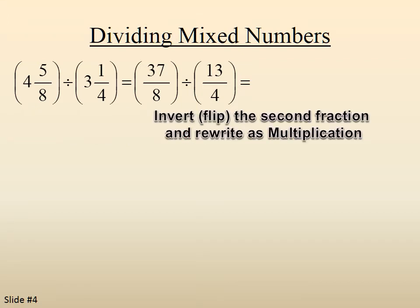So now we're set up where we're dividing improper fractions, but we don't divide fractions. We turn it into a multiplication problem by flipping or inverting the second fraction. So it becomes 37 eighths times 4 thirteenths.